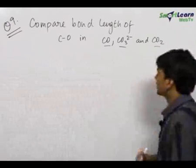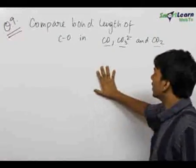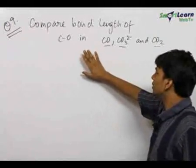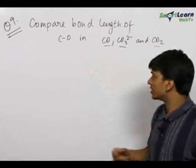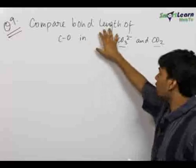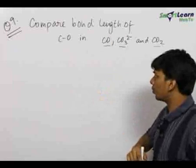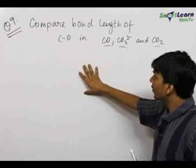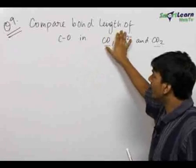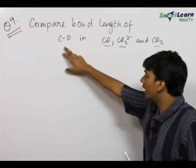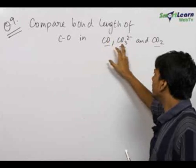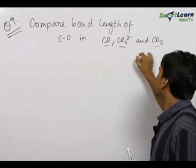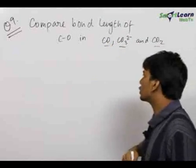Now here is a pretty important question. The concept which you learn here will be applied in many other questions regarding bond length and bond order. We need to compare the bond length of carbon monoxide (CO), CO₃²⁻, and CO₂.